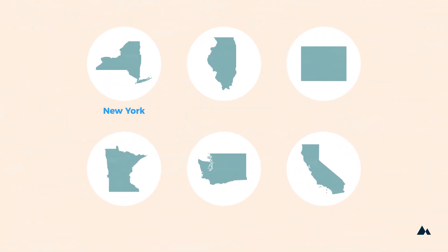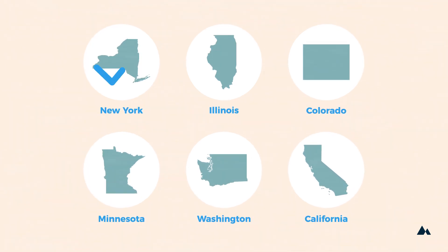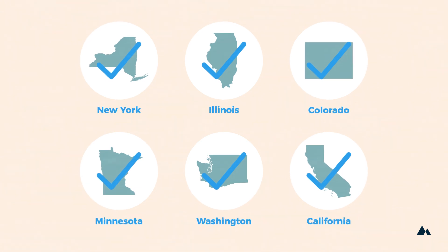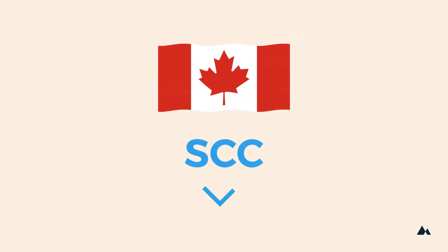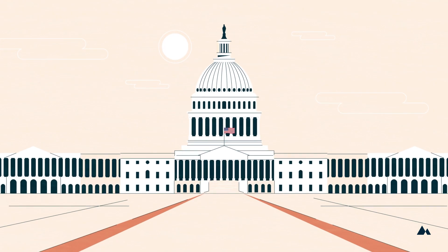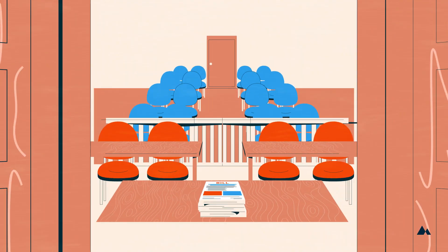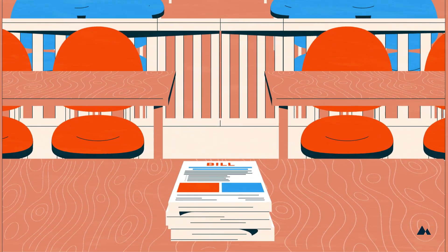States like New York, Illinois, Colorado, Minnesota, Washington, and California use the social cost of carbon for policy analysis or implementation. The Canadian government has adopted the estimation methodology. Federal carbon tax proposals have suggested a starting tax level based on the social cost of carbon.